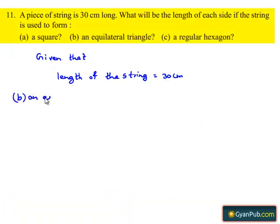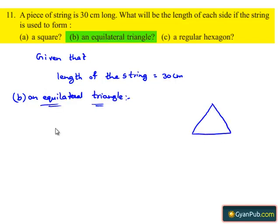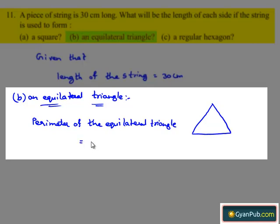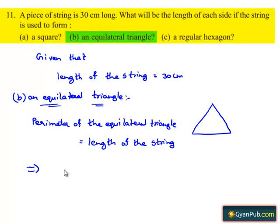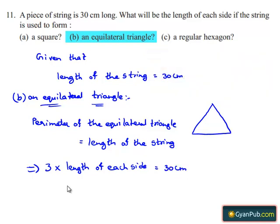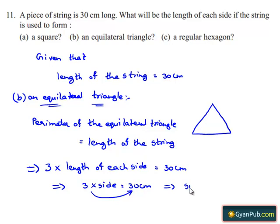Now taking the case of an equilateral triangle — here is the equilateral triangle. In order to form an equilateral triangle with the string, the perimeter of the equilateral triangle must be equal to the length of the string. This means we know that the perimeter of an equilateral triangle is 3 times the length of each side, which is equal to the length of the string, 30 cm. By transposing 3 to the RHS, we get side is equal to 30 cm divided by 3, and 3 goes into 30 by 10 times, giving the length of each side of the equilateral triangle as 10 cm.